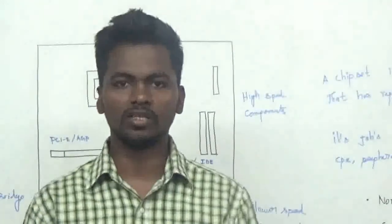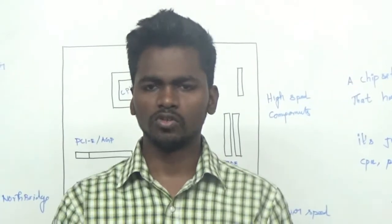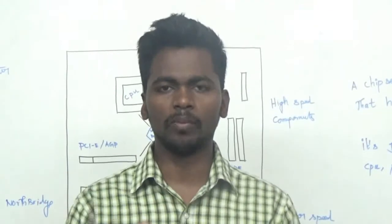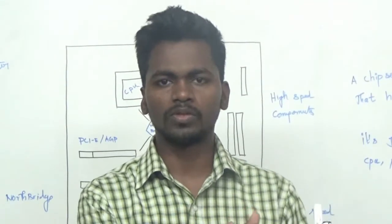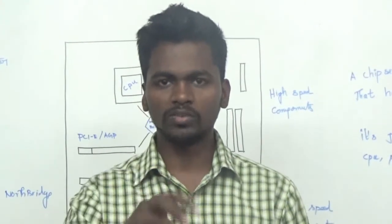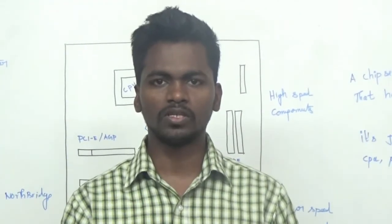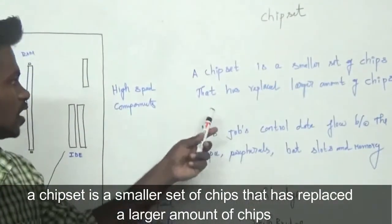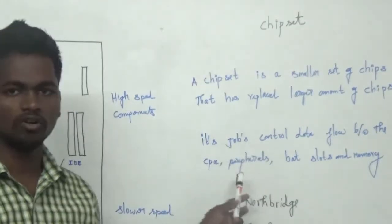So what is the Chipset? It is a lot of chips. One CPU is needed. One group of chips can control each other, and if we can control each other, we can integrate each single chip. So if we have a chipset, this is the definition: the chipset is a small set of chips that can replace a large amount of chips. This is the value of all chips.